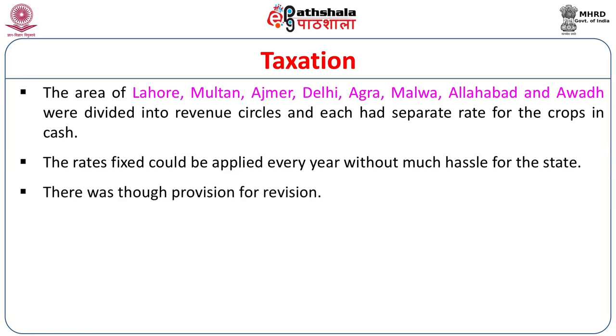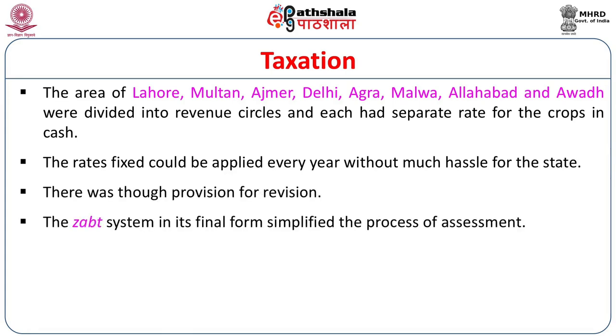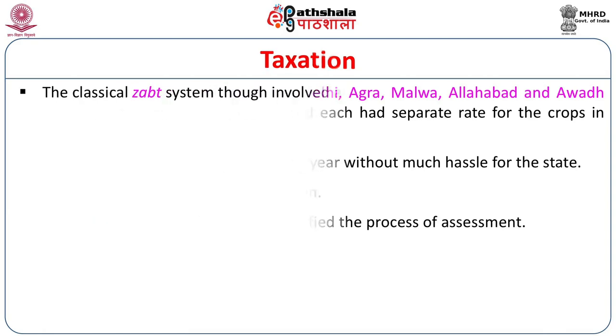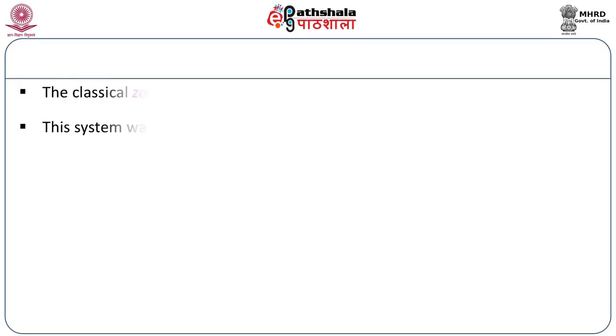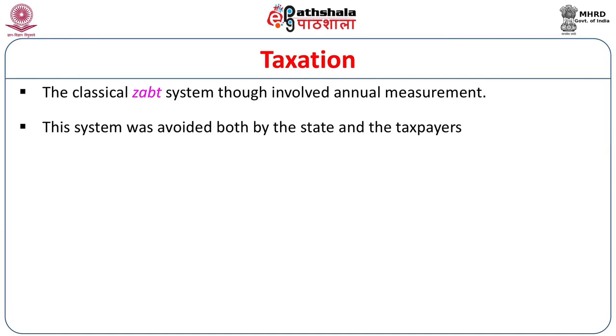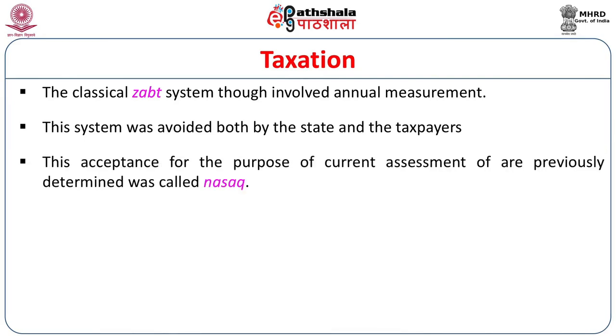There was no provision for revision. The Zabt system in its final form simplified the process of assessment. The classical Zabt system involved an annual measurement, but this was not feasible in a land like India with so much diversity and on such a large scale. This system was avoided by both the state and the taxpayers. The acceptance of previously determined crop rates for current assessment was therefore called Nasak.